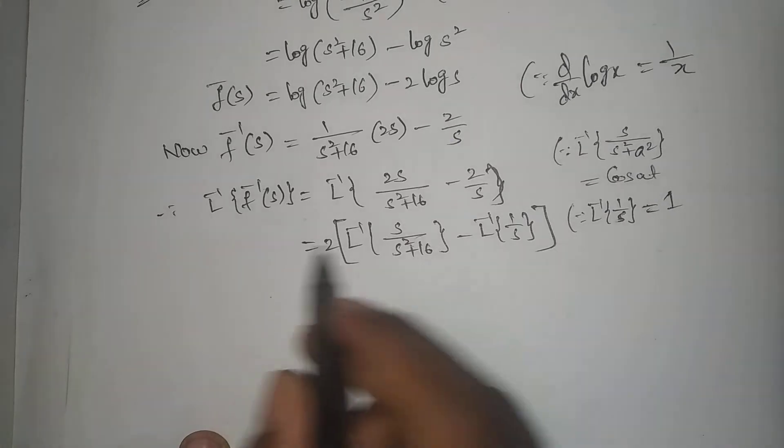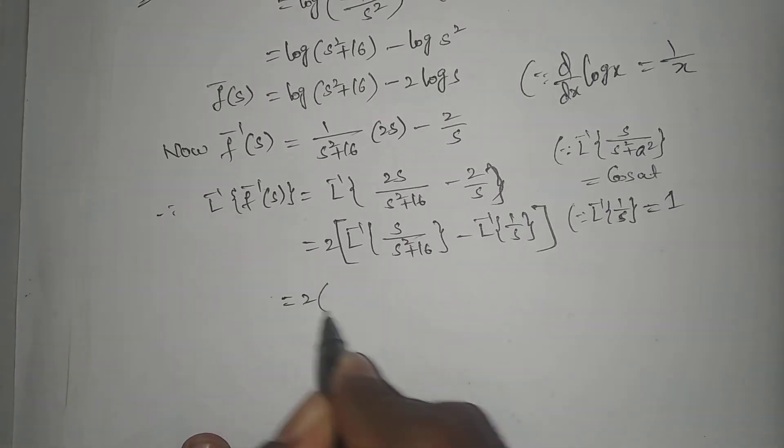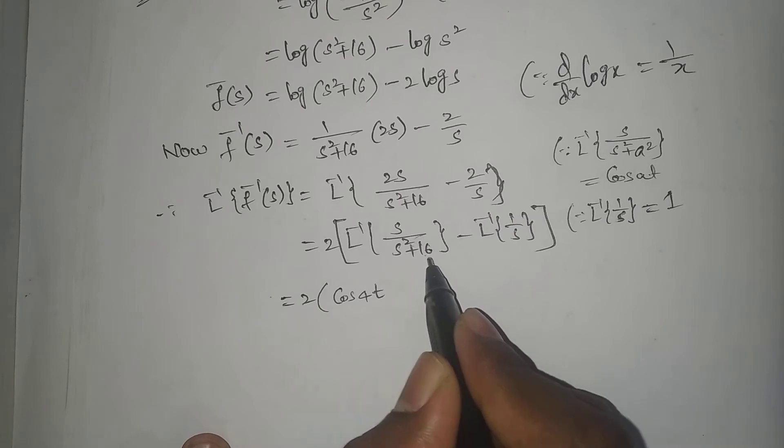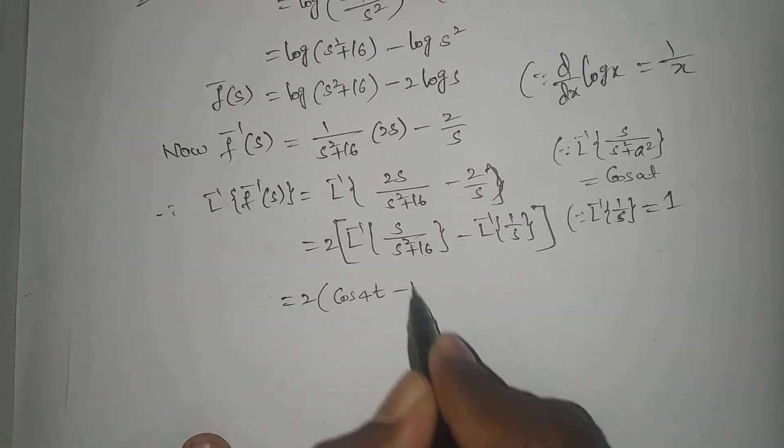L⁻¹{1/s} = 1. That equals cos(4t), where 4 squared is 16. So L⁻¹{1/s} - 1. What is that? L⁻¹{f̄'(s)}.